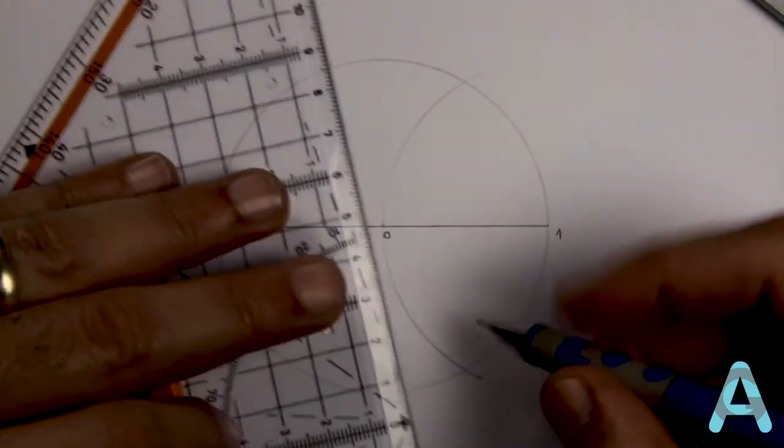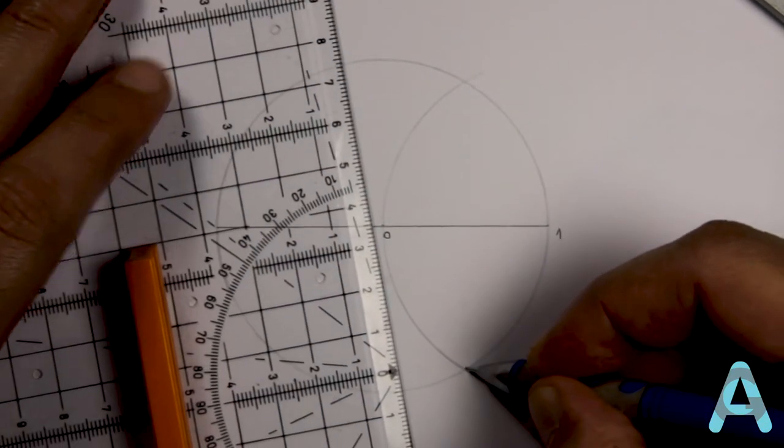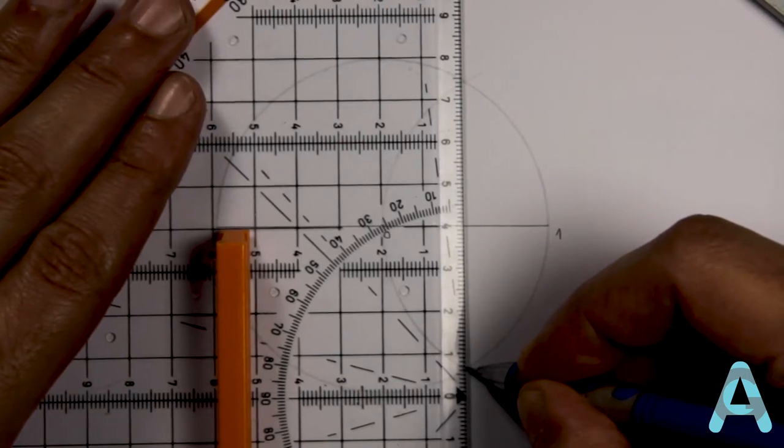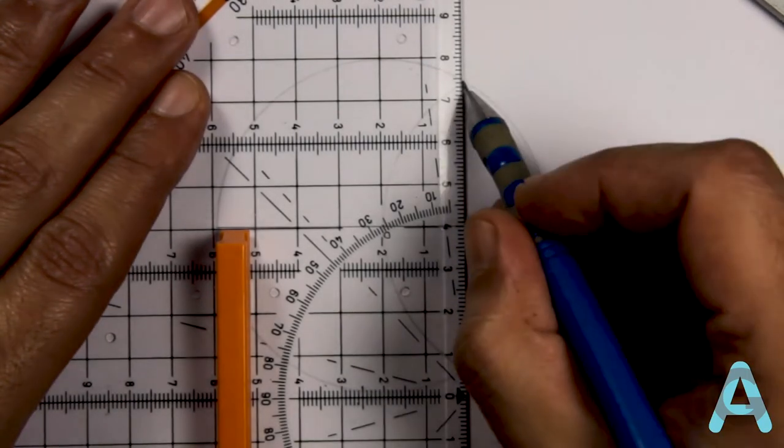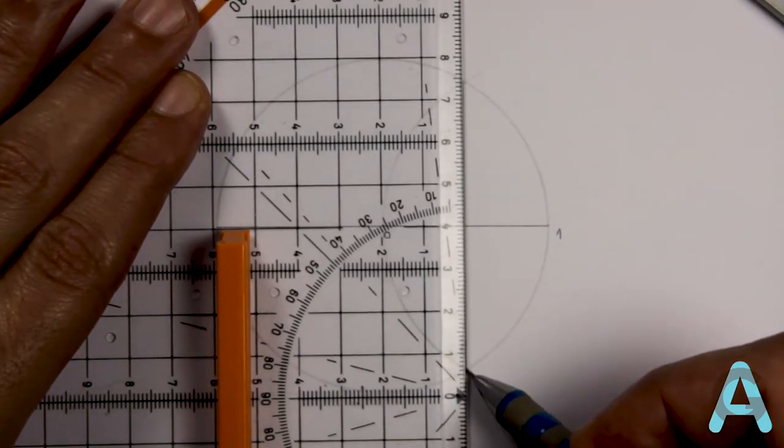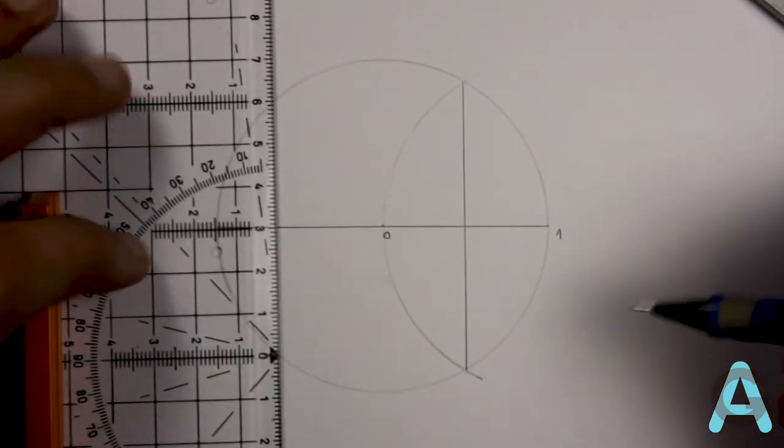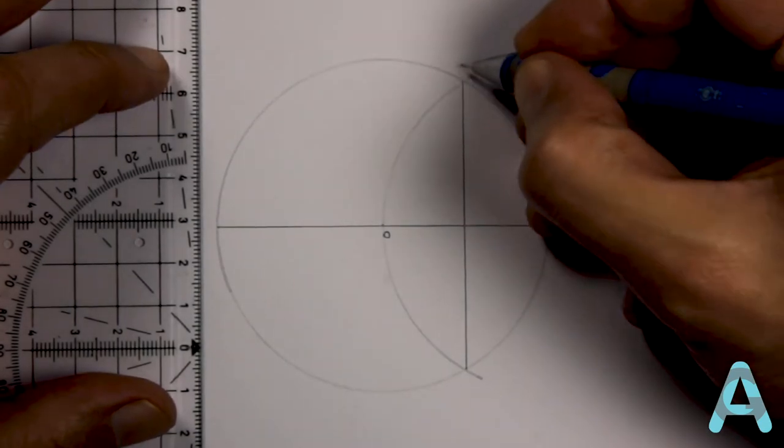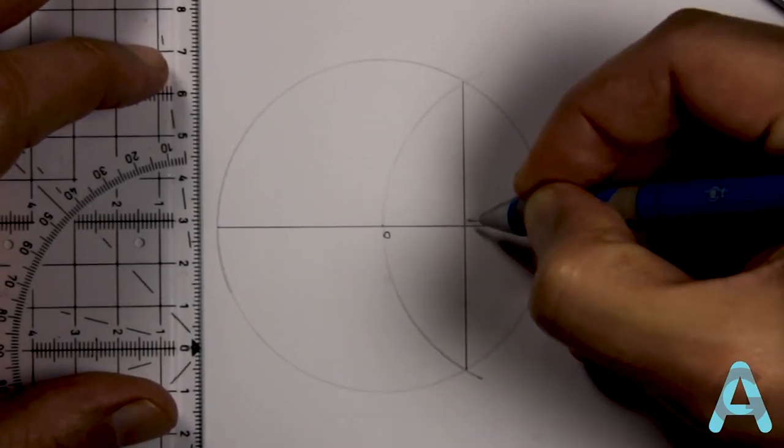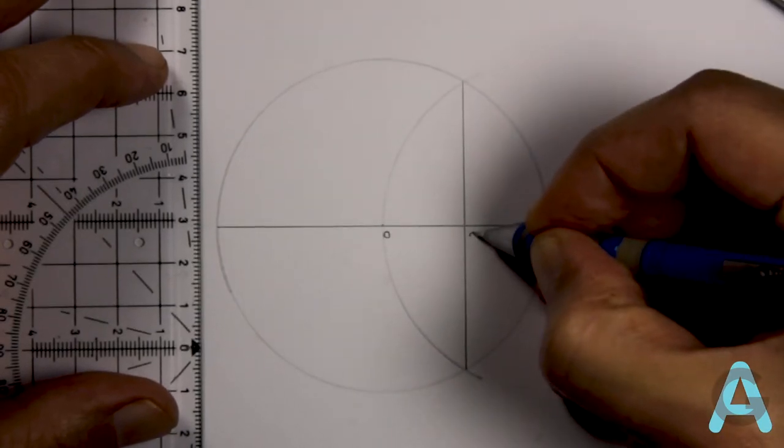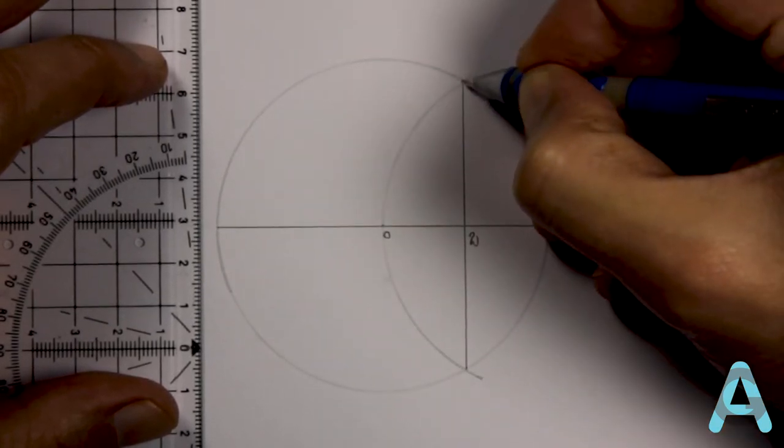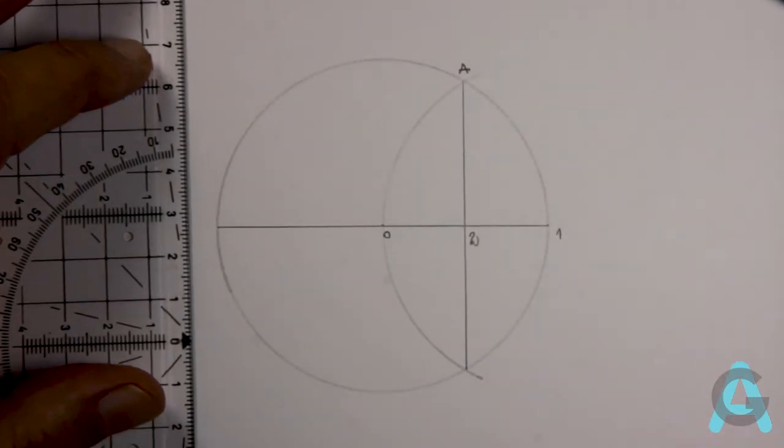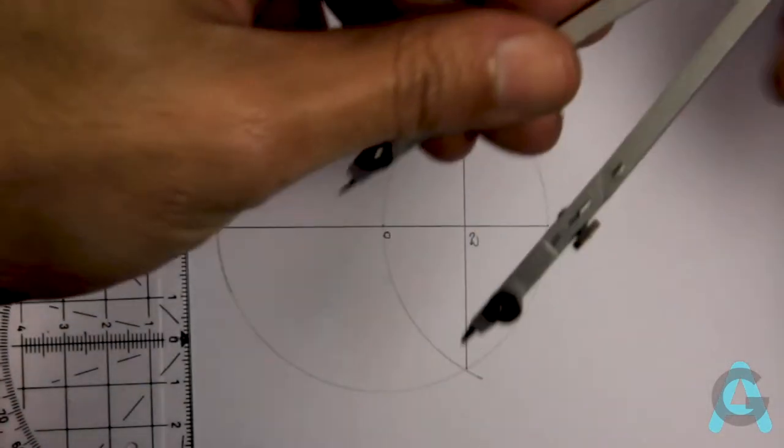Now let's trace the bisection. And the middle point will be named 2. And the interception of the arc with the circle we'll call it A, which will be the first point of our heptagon.